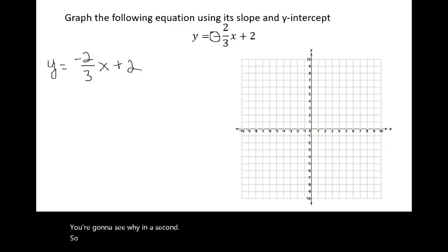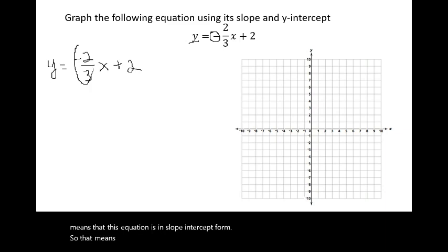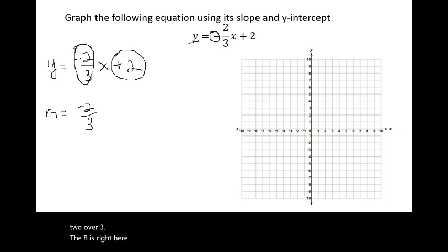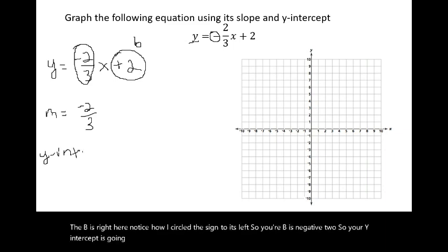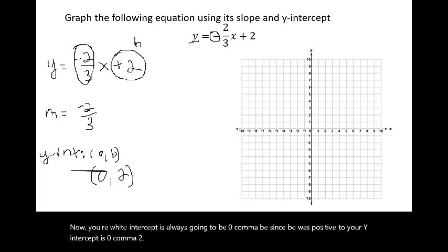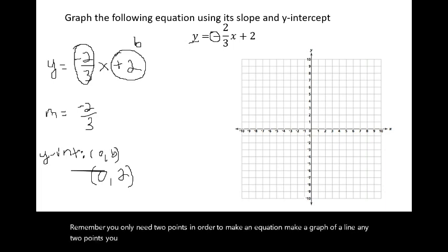Let's check: is y by itself? Yes, so this equation is in slope-intercept form. The number next to x is your slope, so the slope is negative 2 over 3. The b is the number to the right of the sign — since it includes a negative sign, b is negative 2, making the y-intercept positive 2. The y-intercept is always (0, b), so the y-intercept is (0, 2). You only need two points to graph a line.